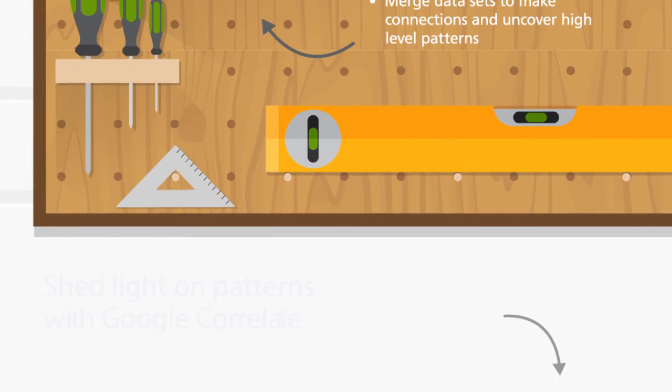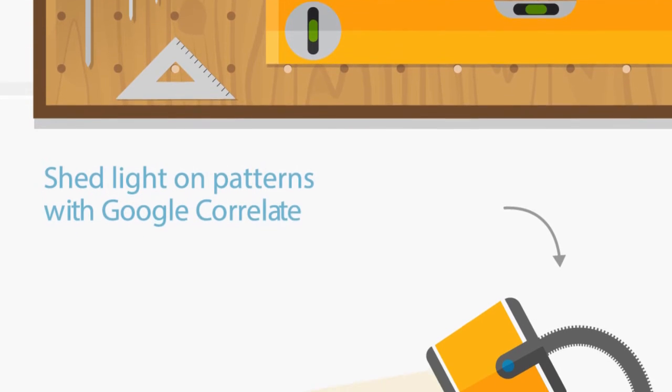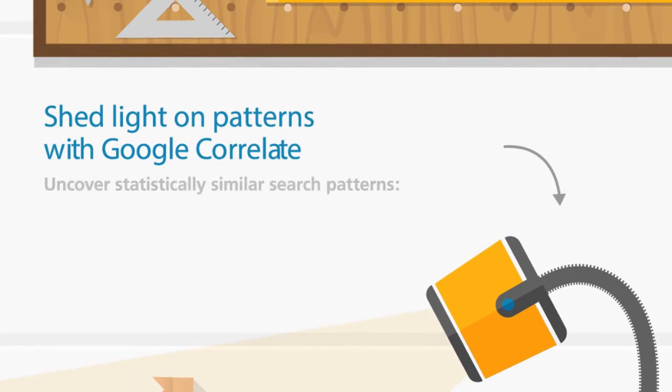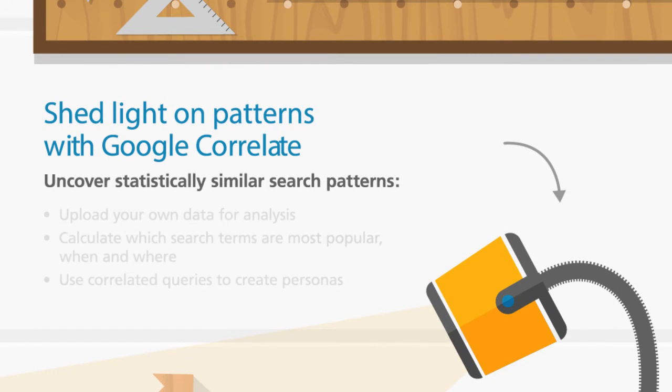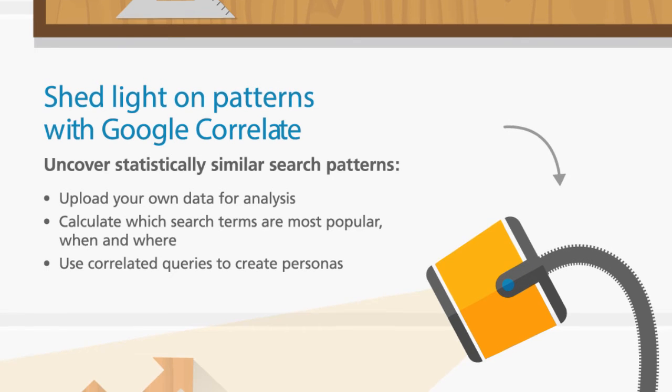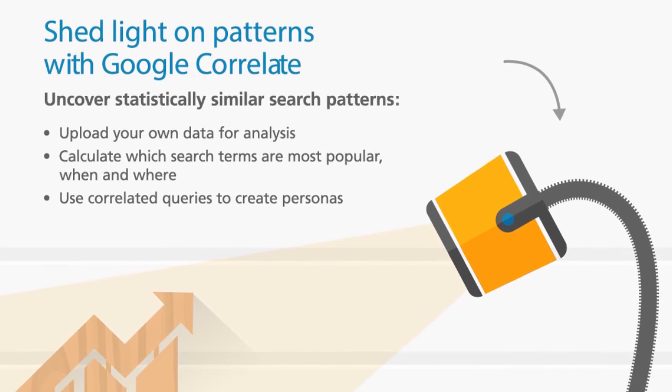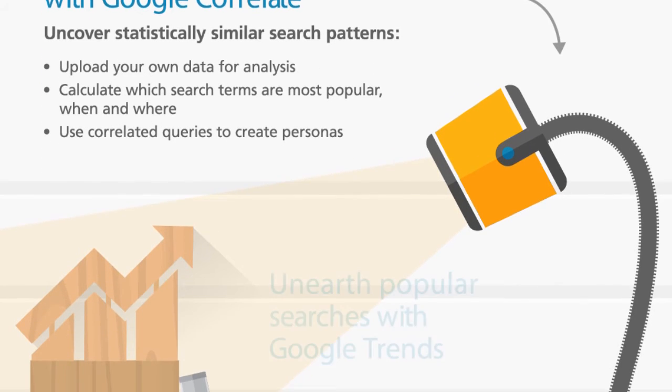Number three: Google Correlate. Use Correlate to uncover statistically similar search patterns for analysis. This may help in keyword development or media purchasing.